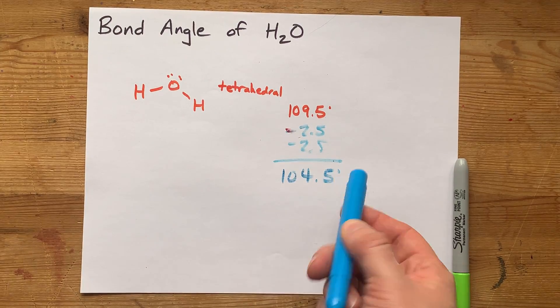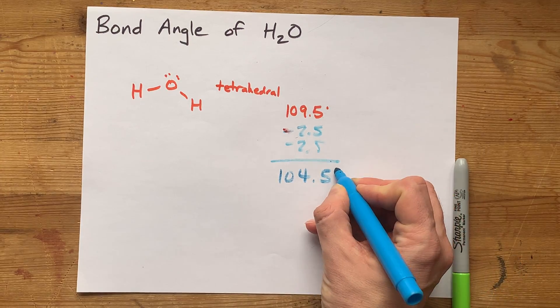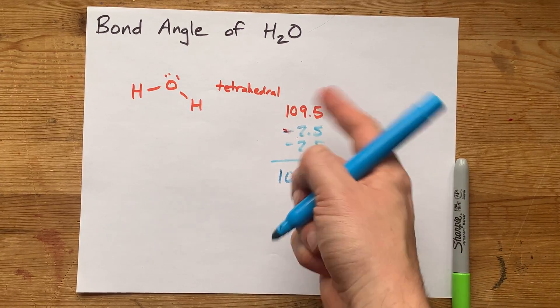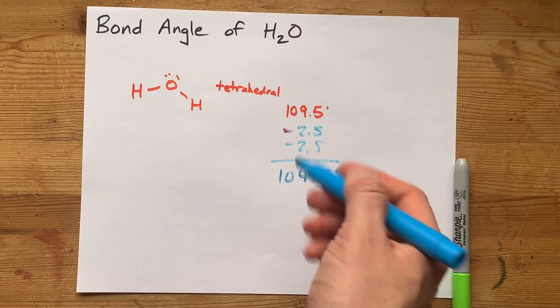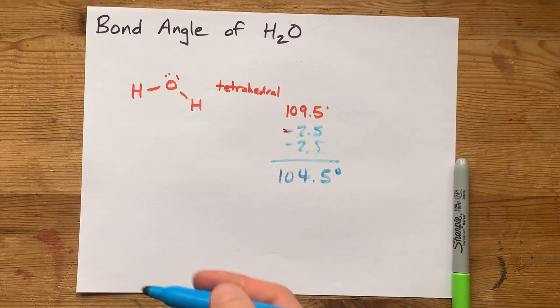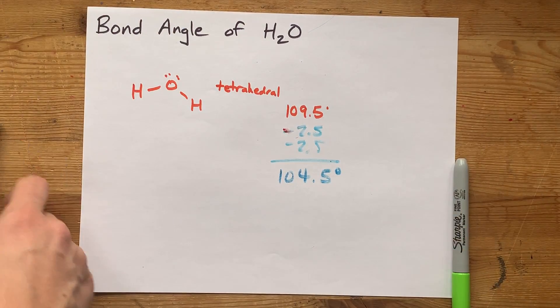If you look it up, this actually happens to be the real bond angle in water, 104.5 degrees. But again, I'm just using a rule of thumb, and it happens to give me the right answer here. Just take away two to three degrees for each of the lone pairs, and you'll get an answer similar to what you have.